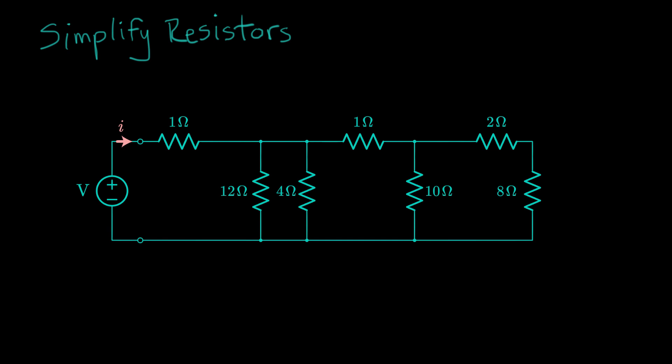We've learned about series and parallel resistors and how to simplify them into an equivalent resistor. Just to review, for the series resistor, R series, an equivalent R series is equal to the sum of resistors in series, R1 plus R2.